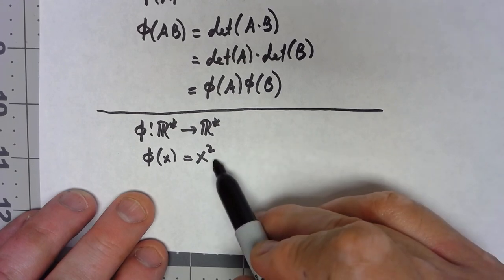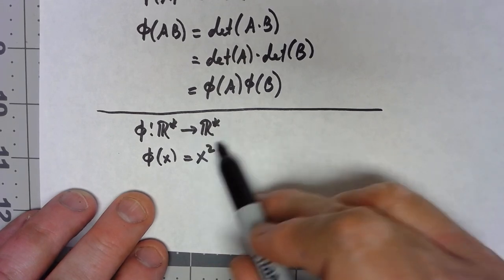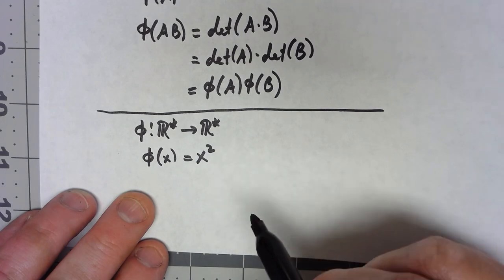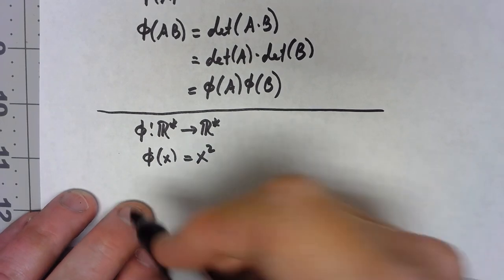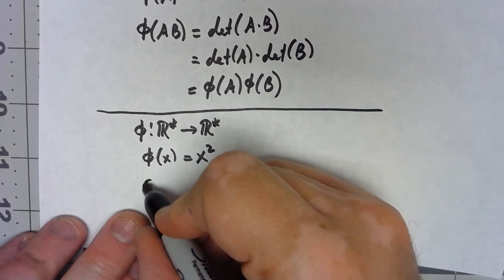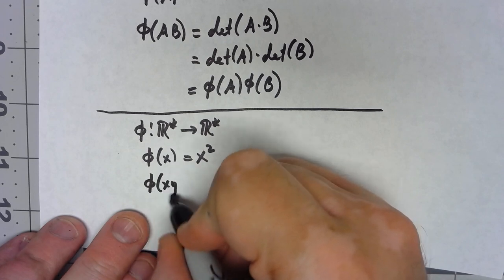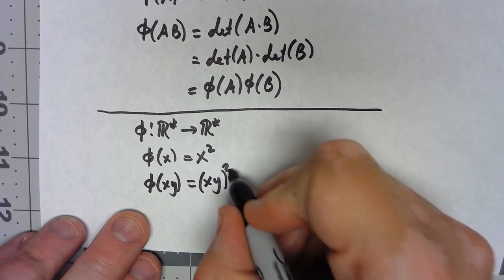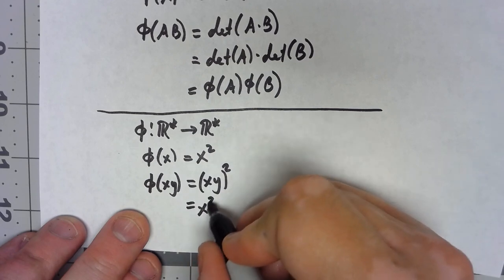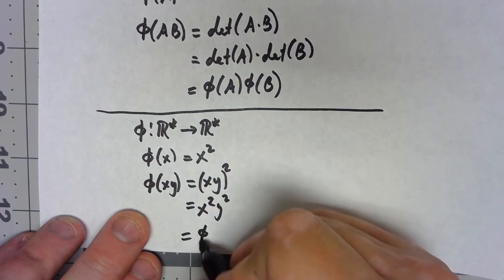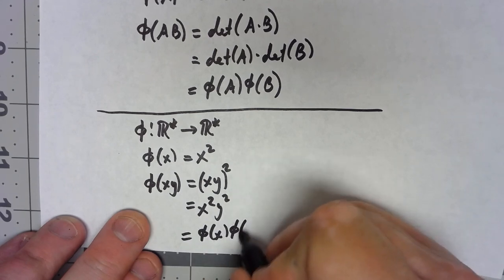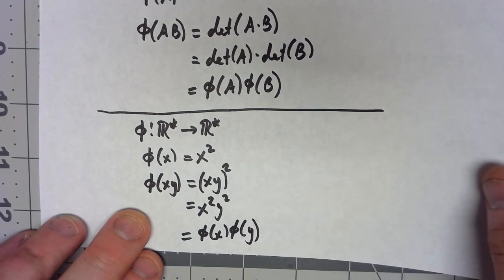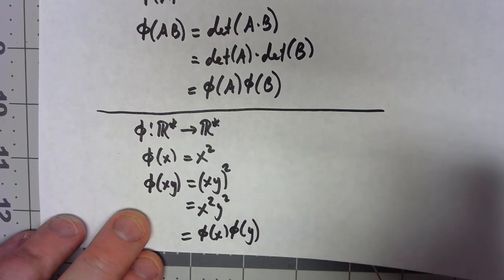But still, if I do phi of xy, that's going to be xy squared, and we know that's the same thing as x squared y squared, which is phi of x phi of y. So all three of these things are in fact homomorphisms.